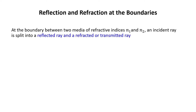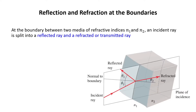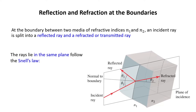Now we want to discuss the refraction of rays. At the boundary between two media of refractive indices N1 and N2, an incident ray is split into two parts. Some part is reflected, shown here by angle theta one with respect to the normal, and some part is refracted, where the angle of refraction is theta two with respect to the normal. The rays lie in the same plane — meaning the incident ray, the reflected ray, and the refracted ray are all in the same plane — and they follow Snell's Law.